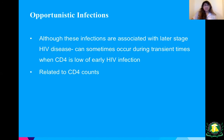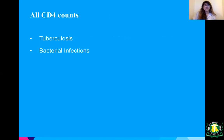Moving on to opportunistic infections. Although these infections are associated with later-stage HIV disease, they can sometimes occur during transient times when the CD4 is low during early HIV infection. These opportunistic infections are related to the particular CD4 count of the patient. At all CD4 counts, things to watch out for are tuberculosis and bacterial infections — these can occur regardless of CD4 count.